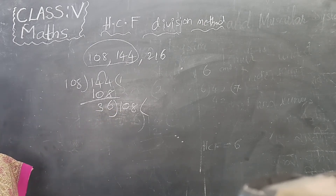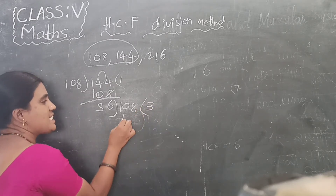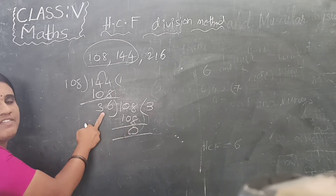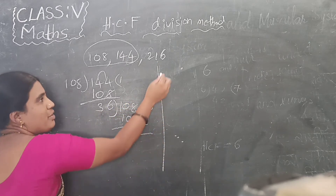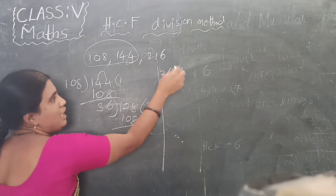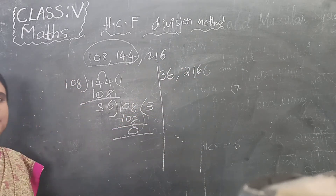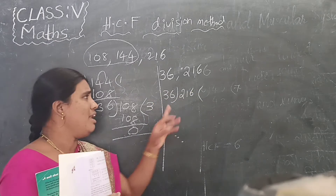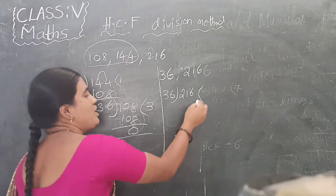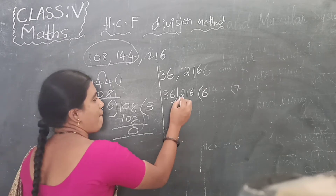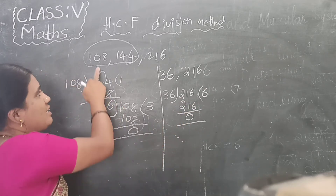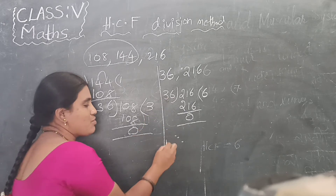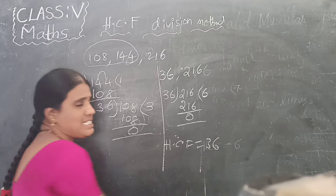Do the division with 36 into 108. In the 36 times table, 36 times 3 is 108. So here we got the remainder as 0 when dividing with 36. Next, do the division with 36 and 216. In the 36 times table, 36 times 6 is 216. So the remainder is 0. In the division of all three numbers, we got remainder 0 when dividing with 36. So HCF of these three numbers is 36.